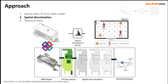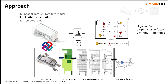Secondly, after extracting the spatial data, we add another layer of detail for each space by dividing each space into finite elements using spatial discretization methods. This allows us to extract the fine-grained location of people in spaces in the form of graphs, and we can add more attributes to each cell node, such as the sky view factor, the biophilic view factor, or daylight elements.